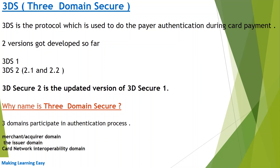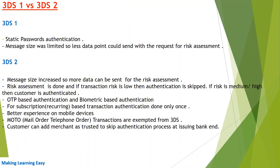The name Three Domain Secure comes from the fact that three domains participate in the authentication process: the merchant domain, which involves the website and payment gateway; the issuer domain, which involves the issuing bank; and the card network.